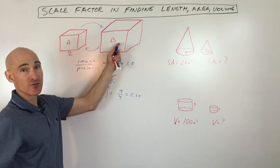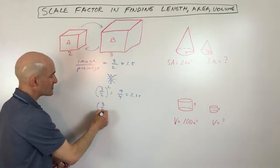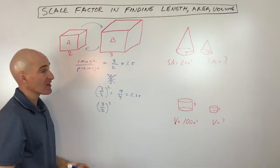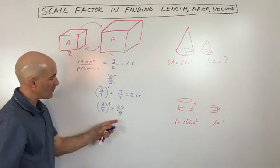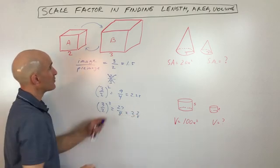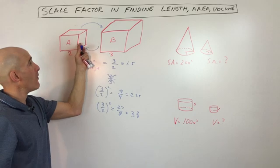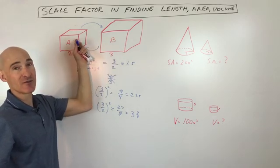Now, if you want to compare the volumes, what you're doing then is you're taking that scale factor, three-halves, and you're cubing it. So now you've got 27 eighths, which is about what? That's three and three-eighths. So the volume here is going to be more than three times, almost three and a half times the volume of this cube here.